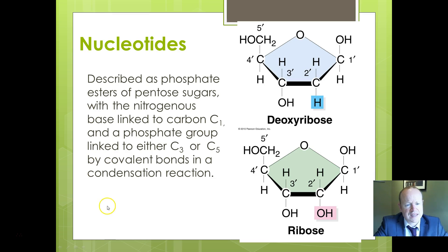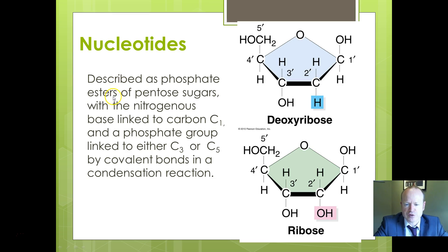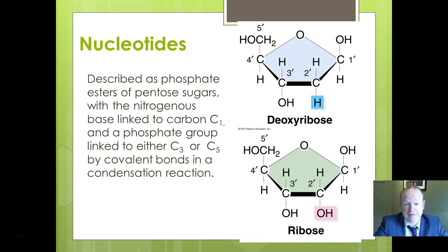Nucleotides are phosphate esters of pentose sugars with a nitrogenous base linked to carbon C1. This is really about how these things join together and what the bonds are. We'll look at those bonds in more detail, including covalent bonds — bonds between things which share pairs of electrons — and condensation reactions, which should also be covered when you do your work on molecules.